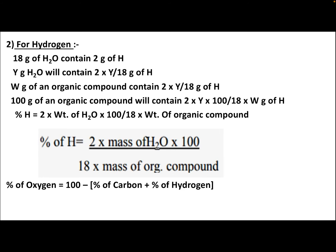For hydrogen: 18 grams of H₂O contains 2 grams of hydrogen (H = 1 × 2 = 2, O = 16, total = 18). Therefore, y grams of H₂O contains (2 × y)/18 grams of hydrogen. So W grams of organic compound contains (2 × y)/(18 × W) grams of hydrogen, and 100 grams will contain (2 × y × 100)/(18 × W) grams. Therefore: % H = (2 × mass of H₂O × 100) / (18 × mass of organic compound).